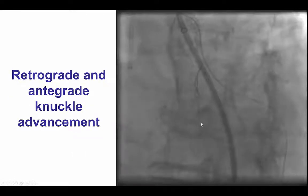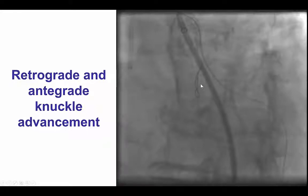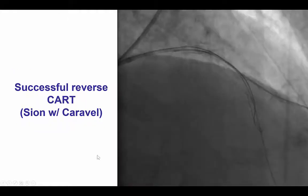We therefore proceeded with retrograde crossing. We advanced the retrograde knuckle wire all the way to the LAD stent, and then using that as a marker, we were able to advance an antegrade Pilot 200 that was knuckled — now we have the knuckled guidewire and the retrograde guidewire in the same space. We proceeded doing reverse CART, which was achieved using a retrograde Pilot 200 guidewire.